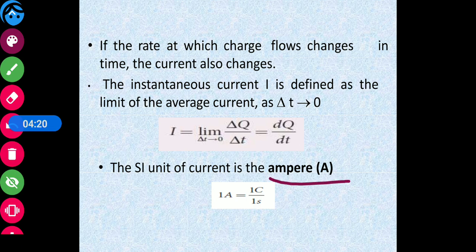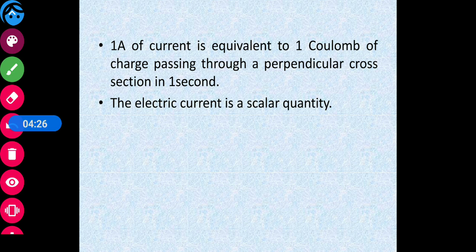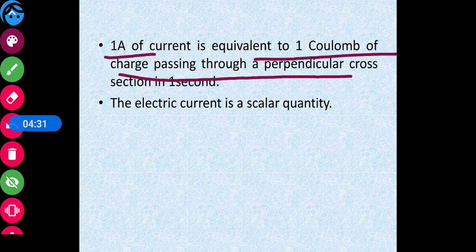The unit of current is the ampere. One ampere equals one coulomb per second, meaning 1 ampere of current is equivalent to 1 coulomb of charge passing through a perpendicular cross-section in 1 second.